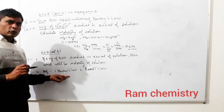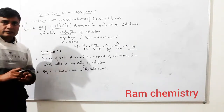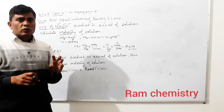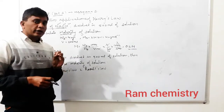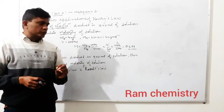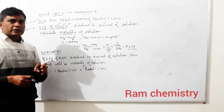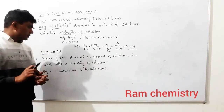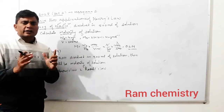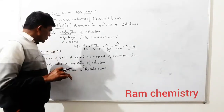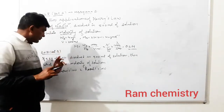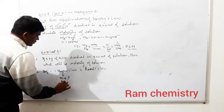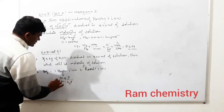Henry's Law kya hota hai? Henry's Law ki do definitions hoti hain. The first one is: the mass of a gas dissolved in any liquid is directly proportional to the pressure applied. Yani kitni gas dissolve hogi kisi liquid ke andar, woh depend karti hai usmein kitna pressure lagaya gaya. Mass is directly proportional to pressure, and m = KHP.